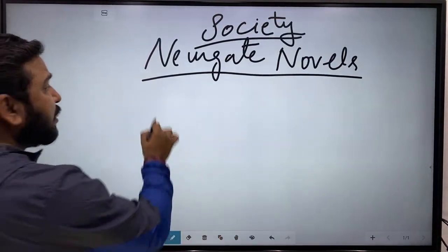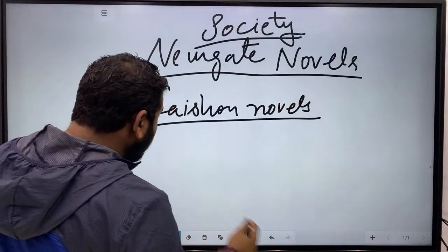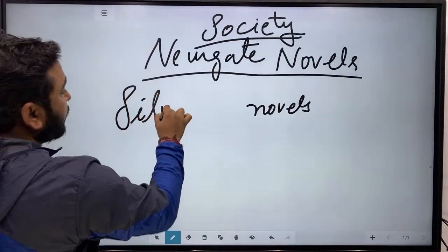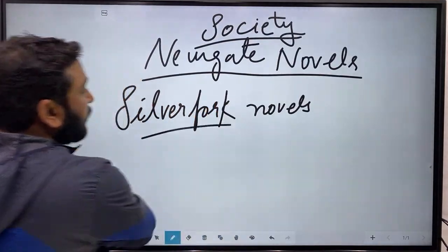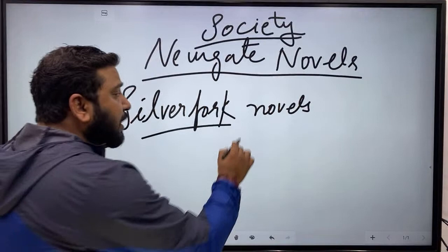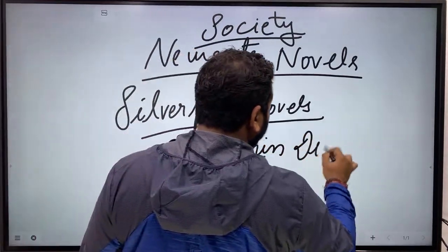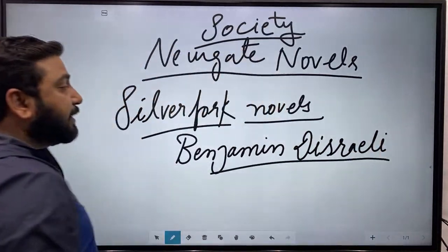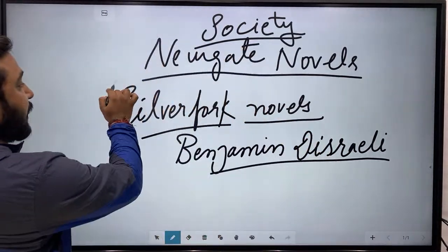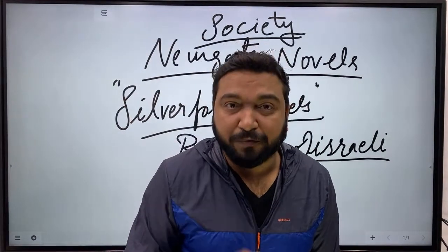There were also Silver Fork novels — novels written by rich people for rich people, dealing with the lives of the wealthy. The most important writer in this genre was Benjamin Disraeli. So Victorians were writing about poor people, criminals, and also only for the rich class. All these types of literature were happening simultaneously in the Victorian era.